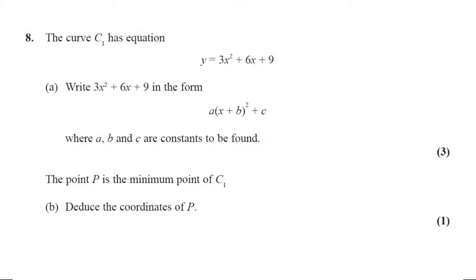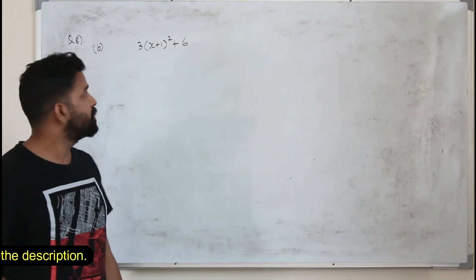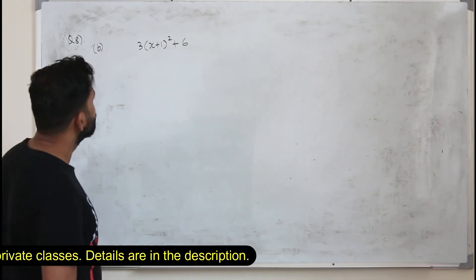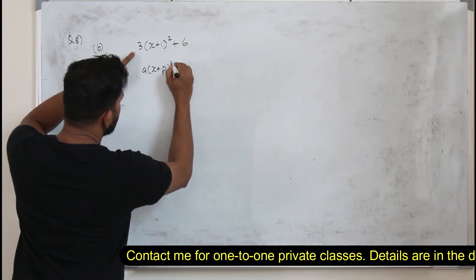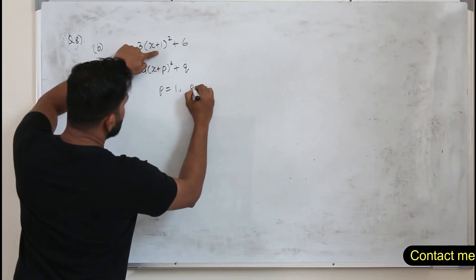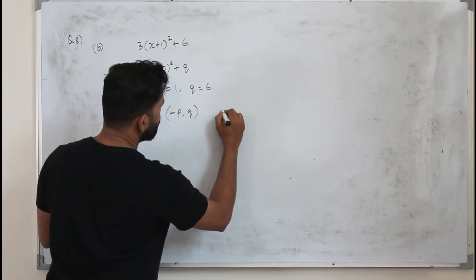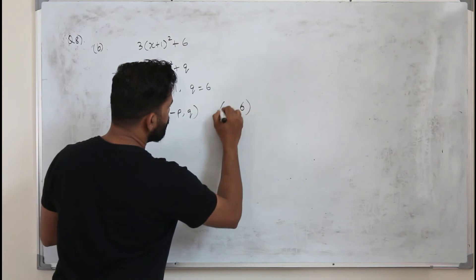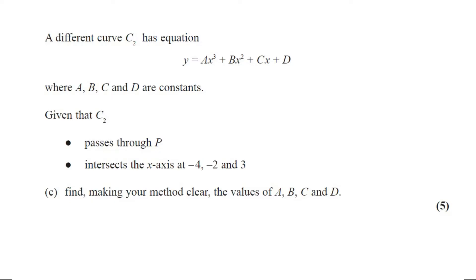Part B: the point P is the minimum point of C1. Deduce the coordinates of P. This question carries one mark. To find the turning point, compare 3(x plus 1) squared plus 6 with a(x plus p) squared plus q. So p equals 1 and q equals 6, giving the coordinates of the minimum point P as (minus 1, 6).